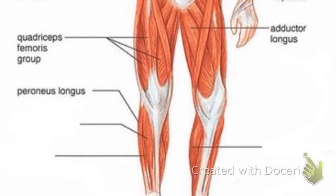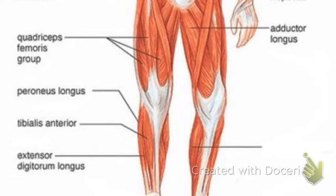Peroneus longus is your outermost muscle of your calf. It allows for abduction of your ankle, so it pulls your ankle out and away. Tibialis anterior is a dorsiflexor, so it pulls your toes closer to your lower leg. Extensor digitorum longus is an extensor, so it helps you point your toes. Your gastrocnemius is your inner calf muscle — when you flex your calf muscle, if you feel on the internal portion of your leg, that is your gastrocnemius that you are feeling.